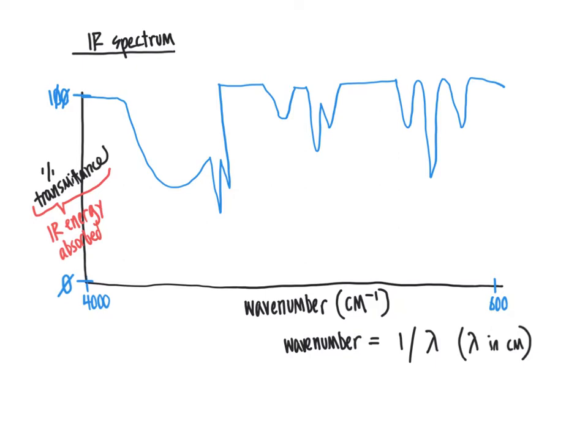One is that between 600 and 1400 wavenumbers, we refer to as the fingerprint region. The fingerprint region of the spectrum is an area where you'll generate lots of different signals. The fingerprint region is useful much like your fingerprint in identifying you.